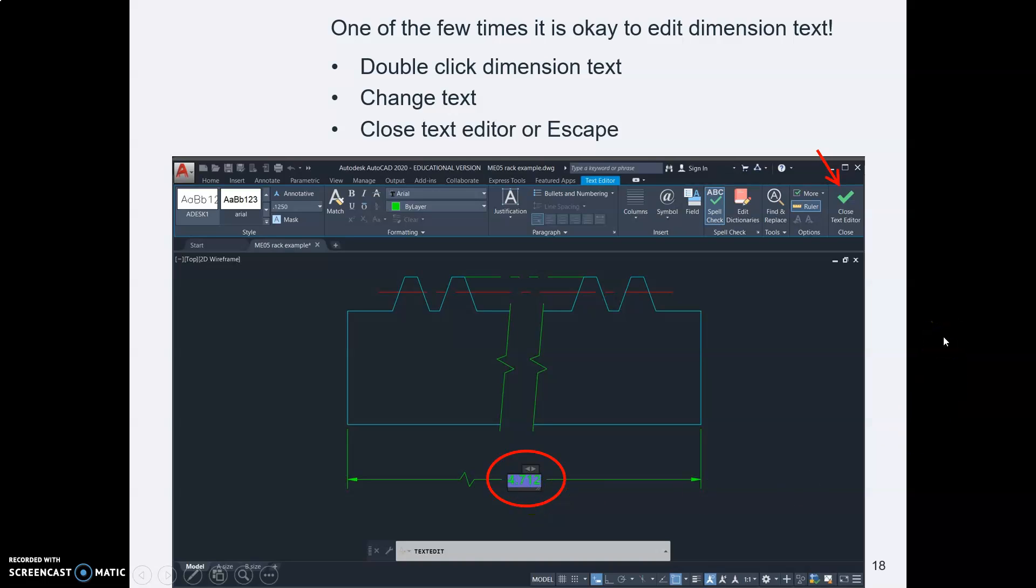Let me just say, I hope this feels really bad to you. Because you should remember, never ever edit dimension text. There are very few times when that's okay. This is one of the few times. Most of the time, we draw exactly to scale and the dimension reports what the size is. It's only when you've made a break in a part and it's no longer to scale and you put a jog in there that it's okay to change that number. Okay, there you go.